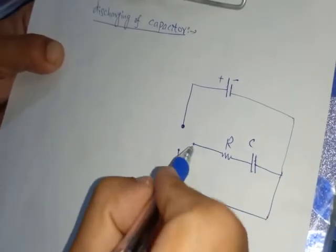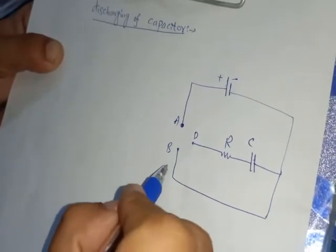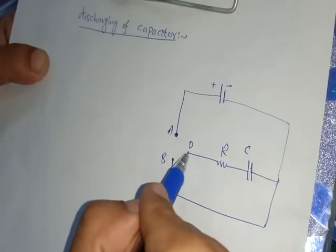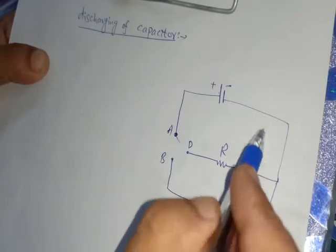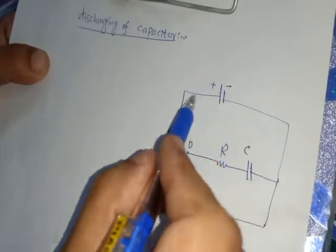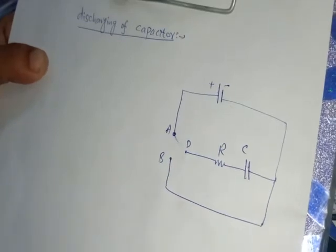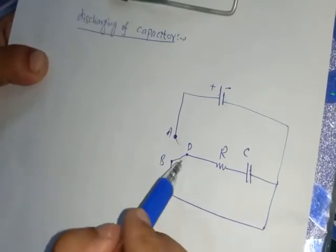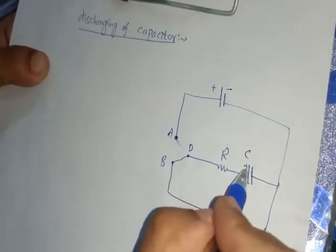When the terminal B is connected with terminal D, then we charge the capacitor. So we connect these two terminals, the current starts flowing and the capacitor gets charged. When the capacitor is fully charged, then we disconnect these terminals and we connect these two terminals.